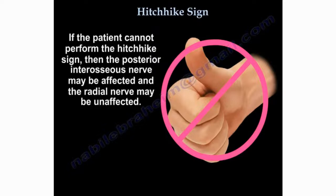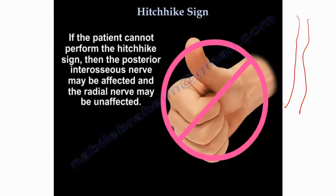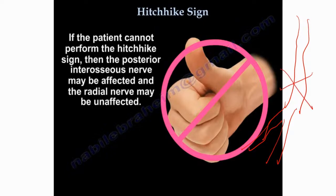This is different from radial nerve palsy, where the patient will not be able to extend the wrist — they will have a wrist drop — and also will not be able to do the HHIK sign or extend the fingers. The radial nerve splits distally into the posterior interosseous nerve and the superficial radial nerve. If the radial nerve is injured at that proximal level, it wipes out both wrist extension and finger extension. If only the posterior interosseous nerve is affected, the person retains wrist extension but loses finger extension.